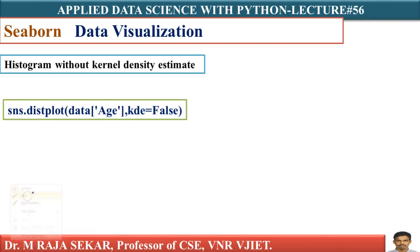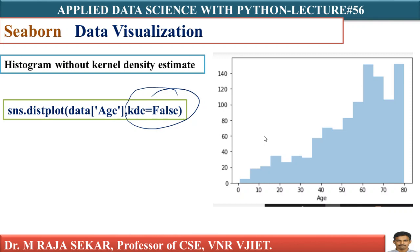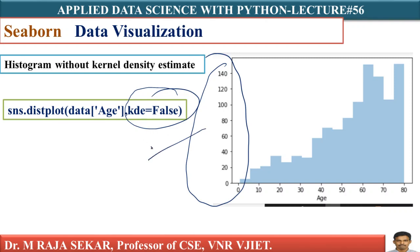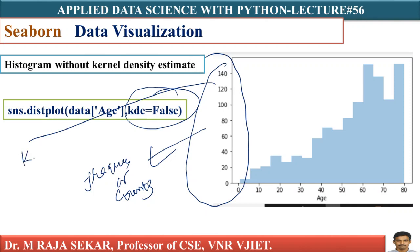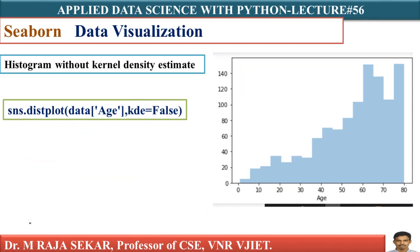In the previous case we were not specifying the kde argument, so by default kde equals True. Now we are setting kde equal to False. Look at the output — it is similar to the previous output, but on the y-axis the values now represent frequencies or counts. Compare this with the previous output: in the previous output you had KDE values on y-axis, but now you have frequencies or counts, simply by setting kde equal to False.